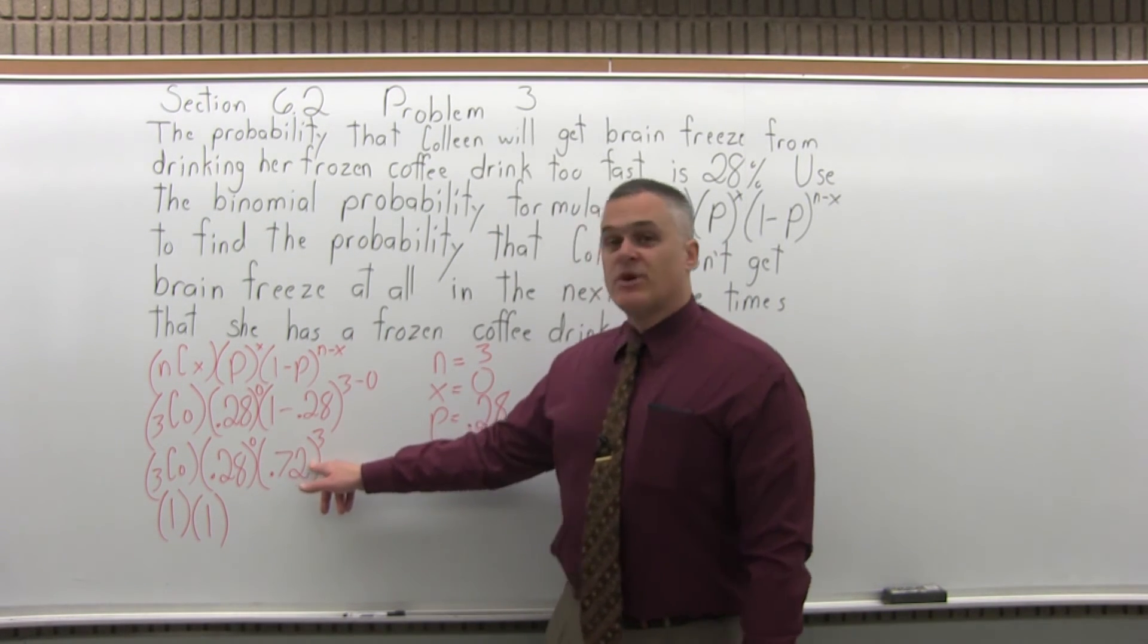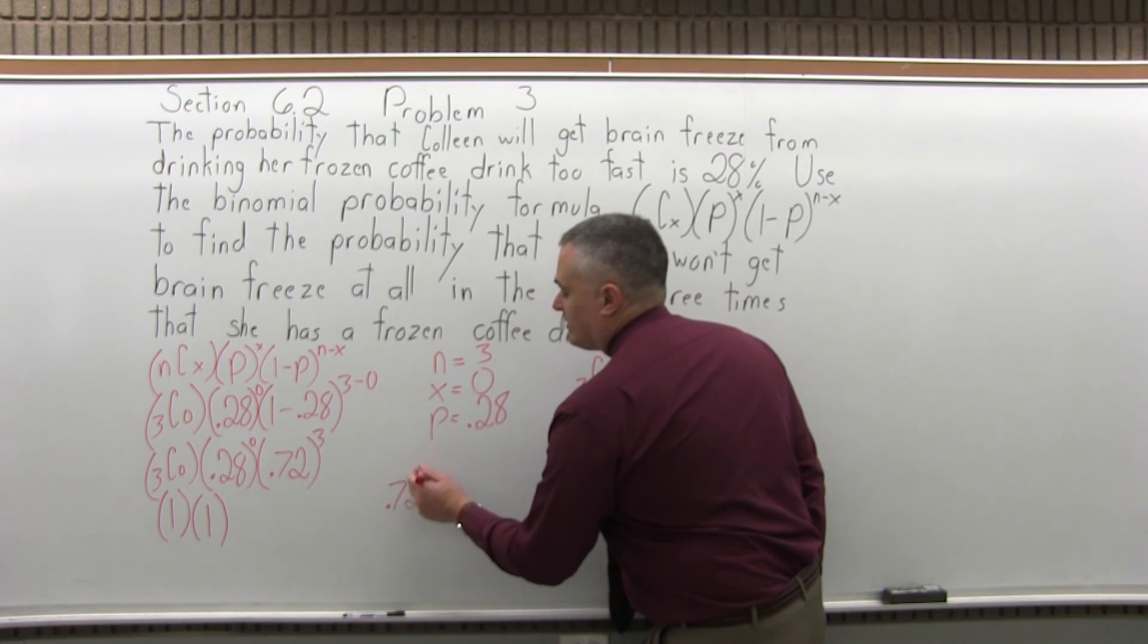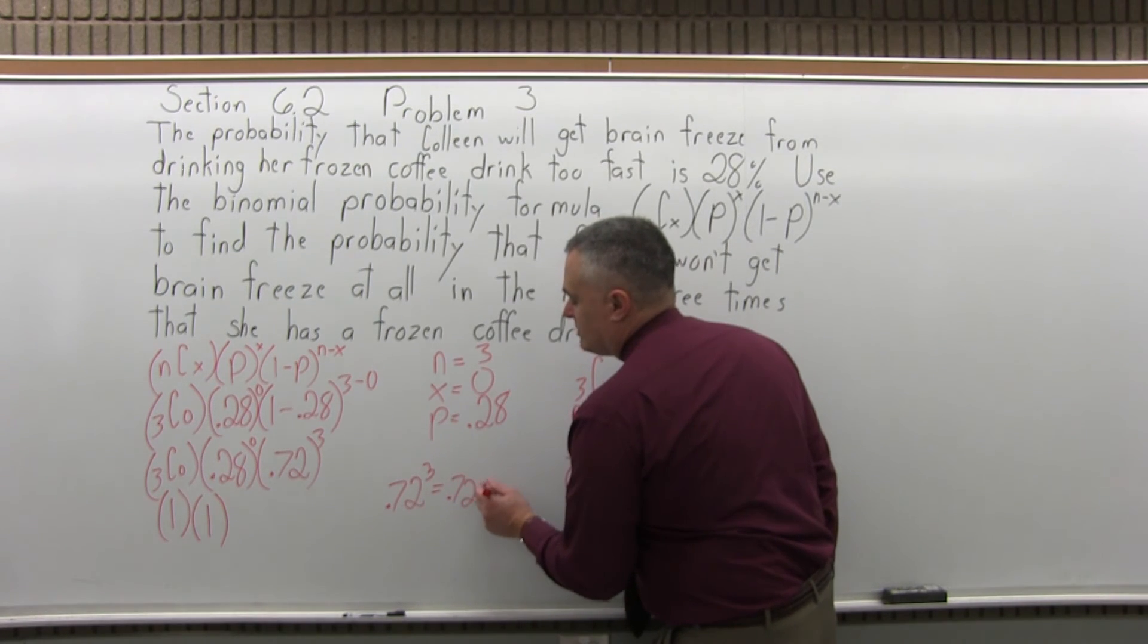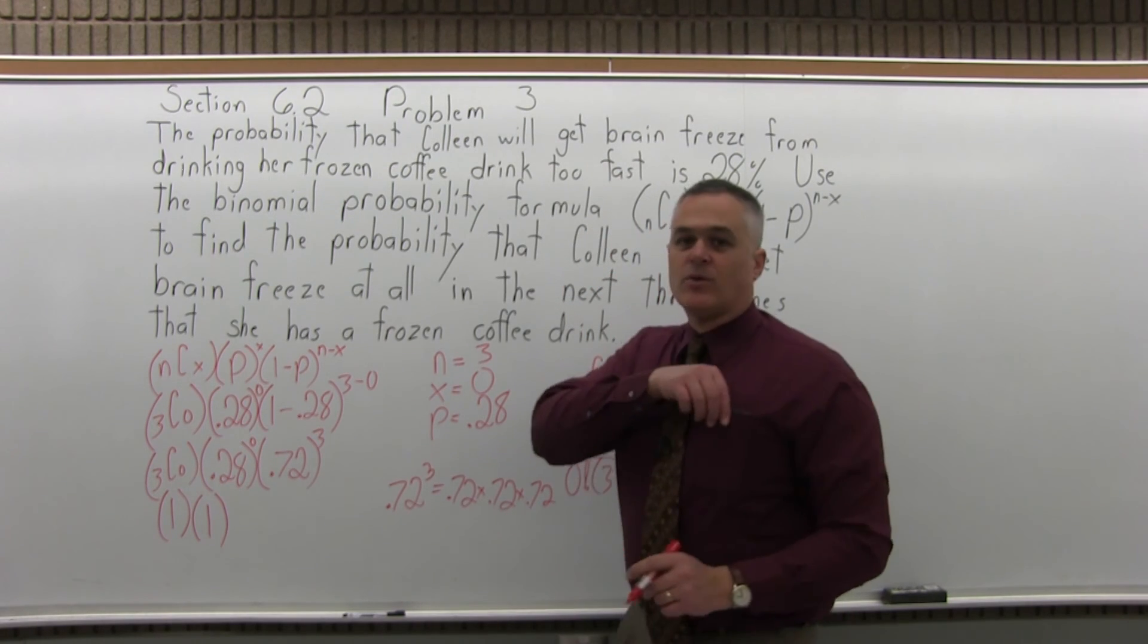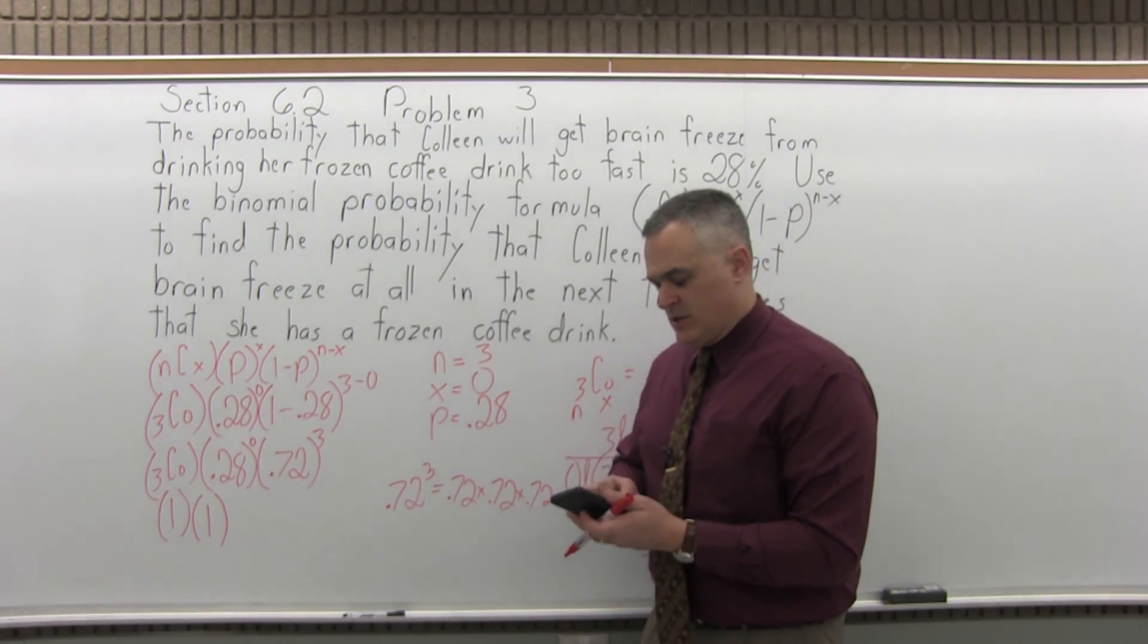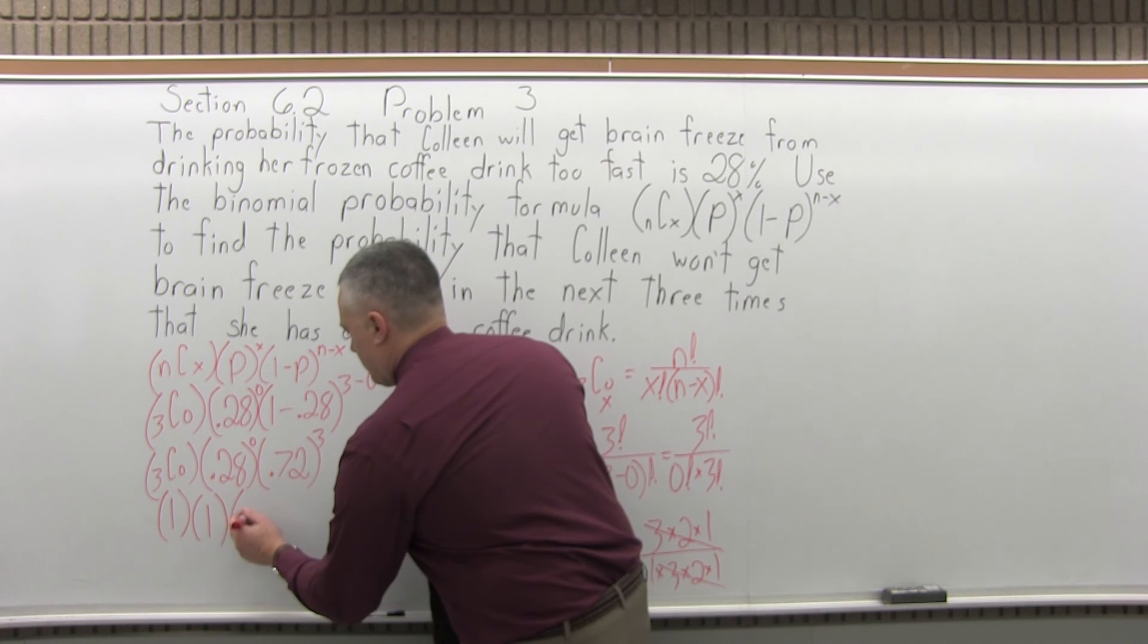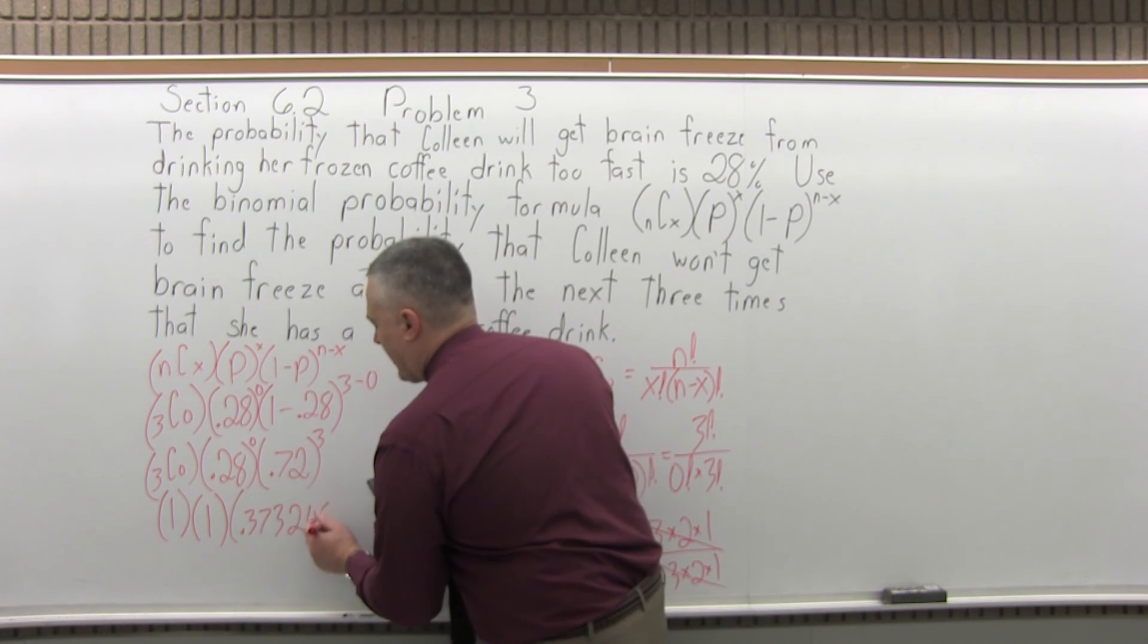And now the last set of parentheses, 0.72 to the third, will be 0.72 times 0.72 times 0.72. You'll have three of them multiplied together. That's something I would want to do with a calculator, and we'll do it very easily. 0.72 times 0.72 times 0.72, and the answer comes out to 0.373248.